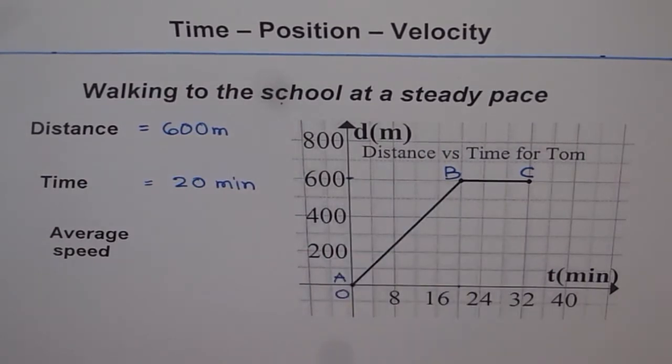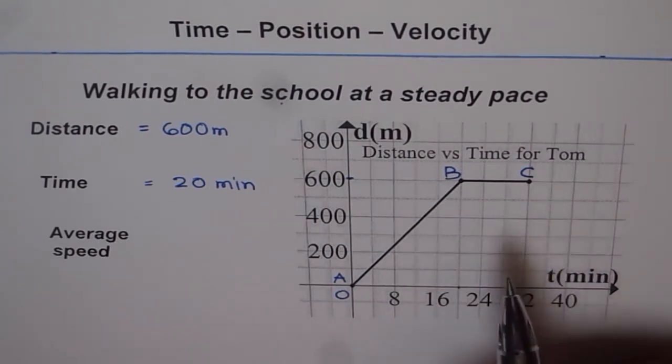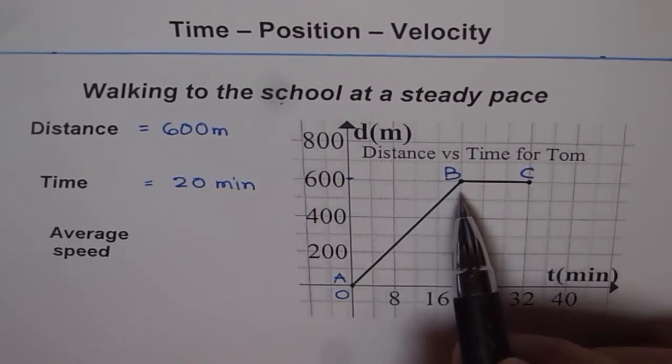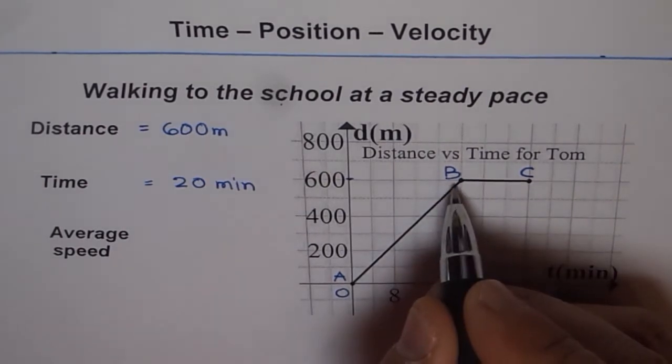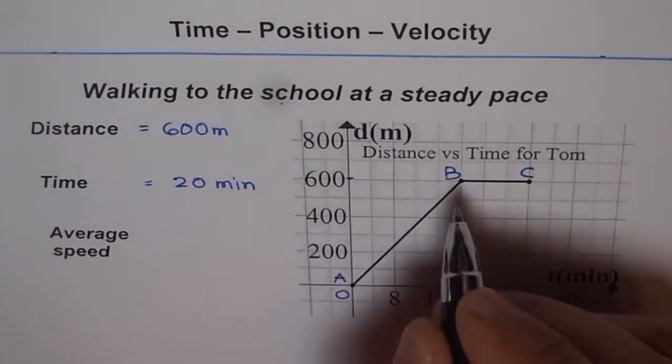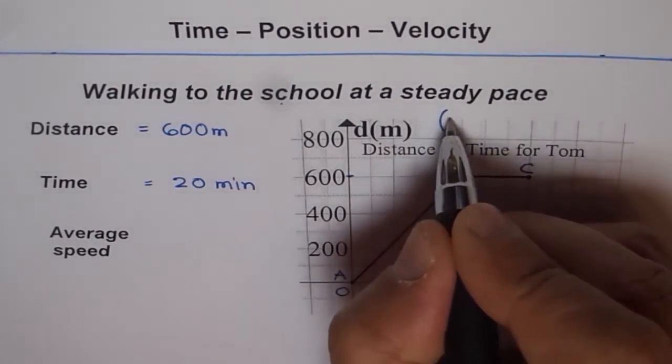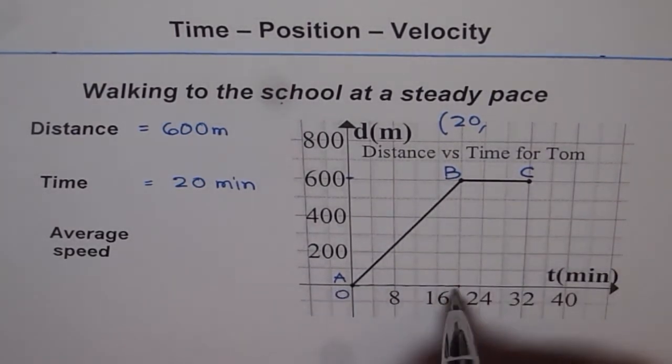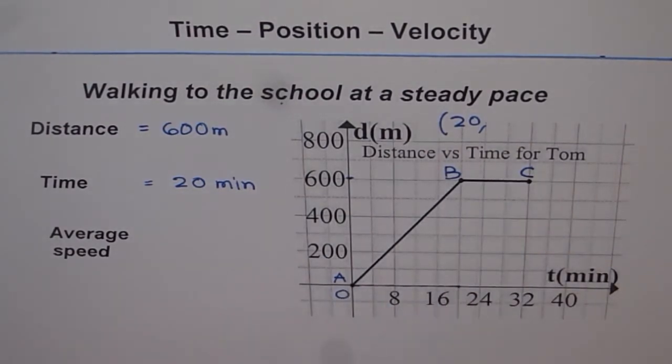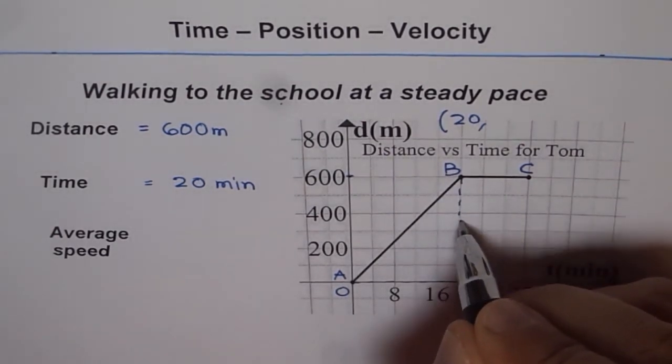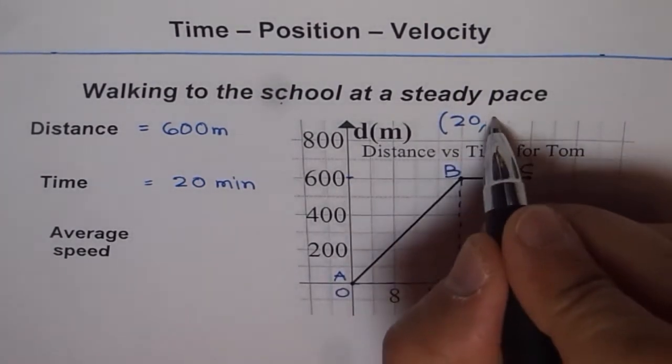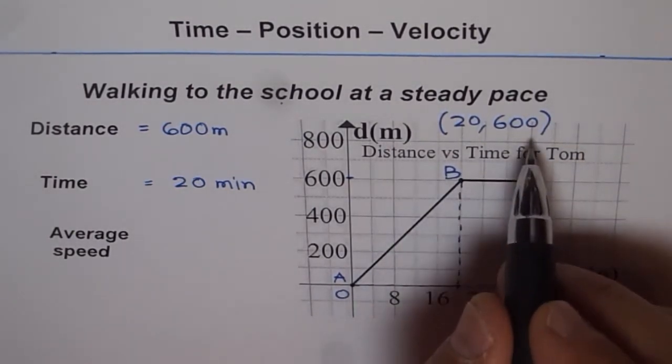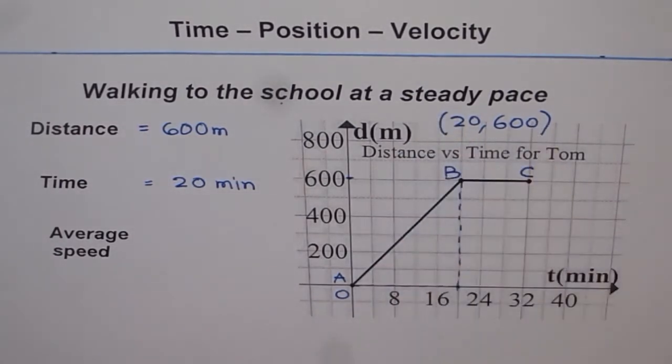So now you have understood one thing that in a distance versus time graph we can straight away read position with the help of time and distance. So at b the position is 20, 600. We can write like this. 20 is the x value which we go like from here to here. That is 20. And that is the time. So time taken for Tom to reach school was 20 minutes. And in these 20 minutes how much distance did he cover? He covered a distance of 600 meters. So that is the dependent variable value. It comes later. So position b can be defined by the coordinate 20, 600 within parenthesis.